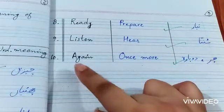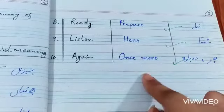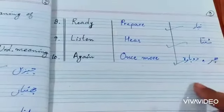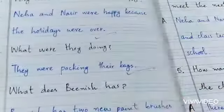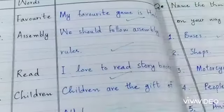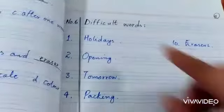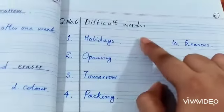Number 9: Listen — Hear — Sunna. Number 10: Again — Once more. Now turn the page and draw a line for dictation words. Write the question: difficult words.